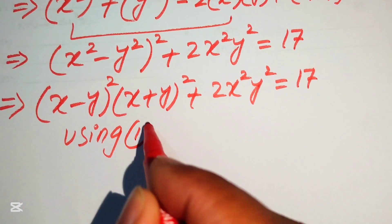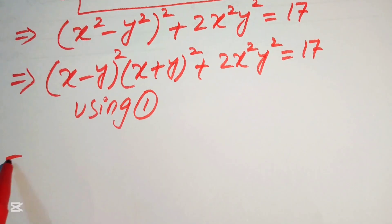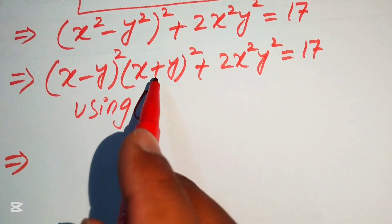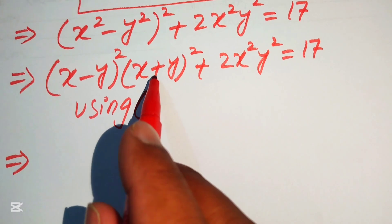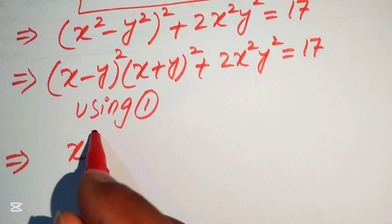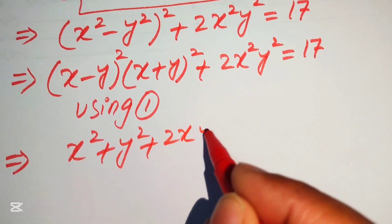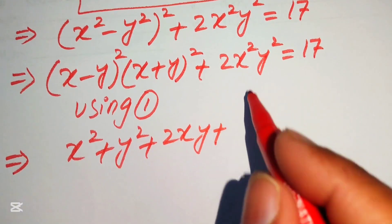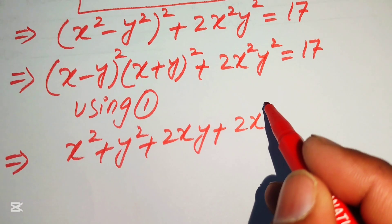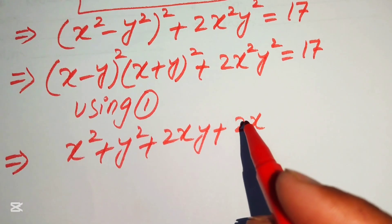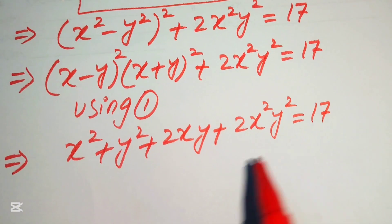Using equation 1, x − y = 1, that term is eliminated, leaving (x+y)² times 1² = (x+y)². Expanding (x+y)², we get x² + y² + 2xy, plus 2x²y² = 17.